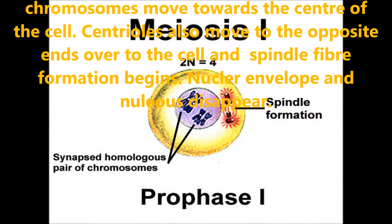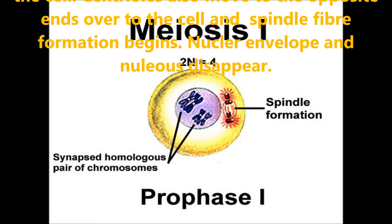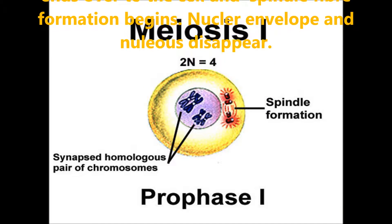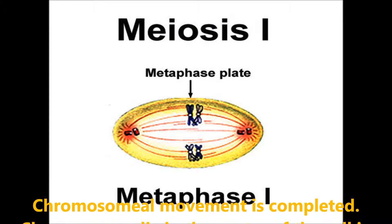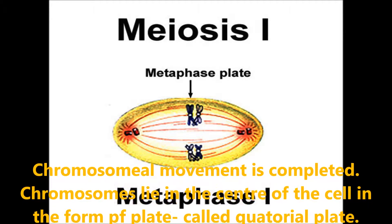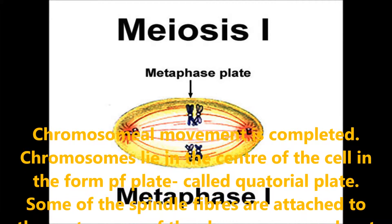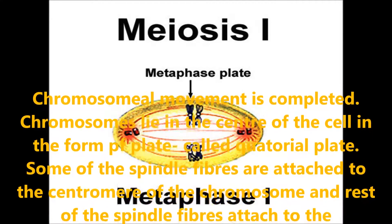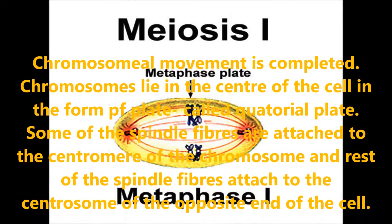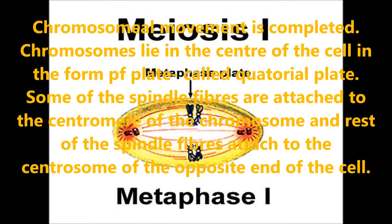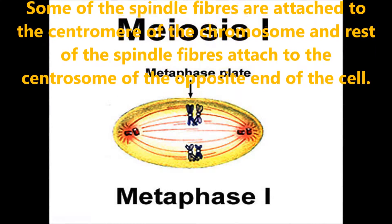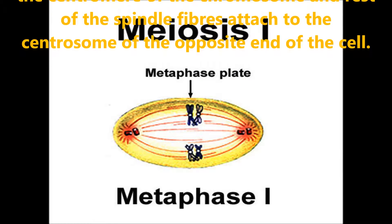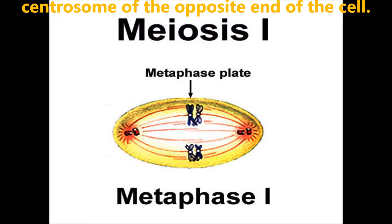Centrioles also move to the opposite ends and the spindle fiber formation begins. The nuclear envelope and nucleus gradually start to disappear. In metaphase 1, chromosomal movement is completed and chromosomes lie in the center of the cell in the form of a plate called the equatorial plate. Some of the spindle fibers are attached to the centromere of the chromosomes, and the rest of the spindle fibers are attached to the centrosome at the opposite end of the cell.